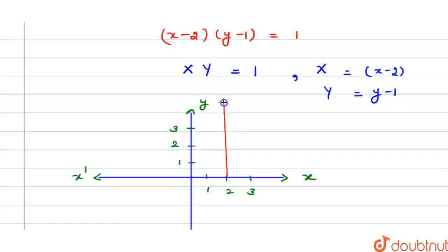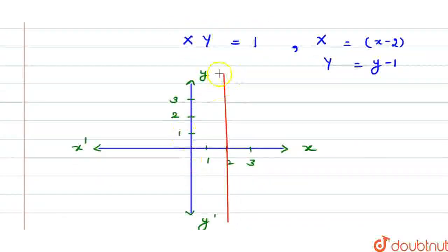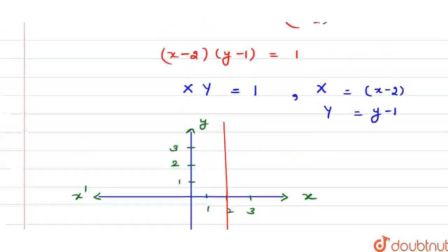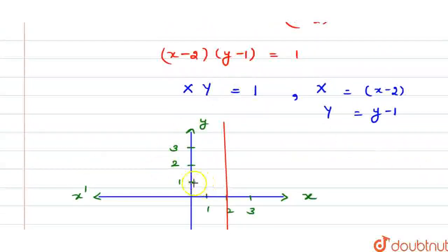And the second horizontal asymptote will be y equals 1. So, this is the line y equals 1, which will be the horizontal asymptote for the rectangular hyperbola.